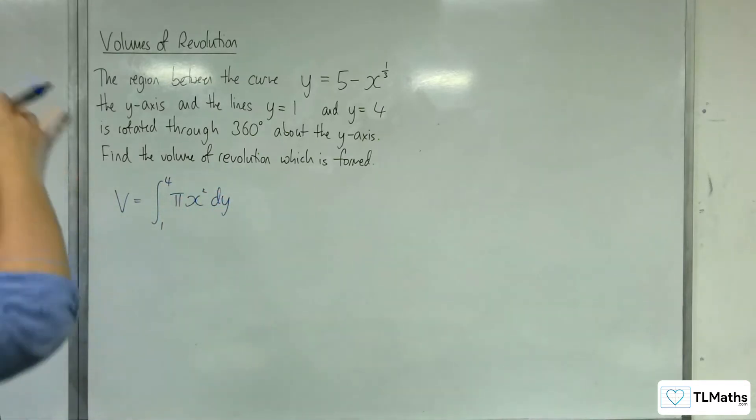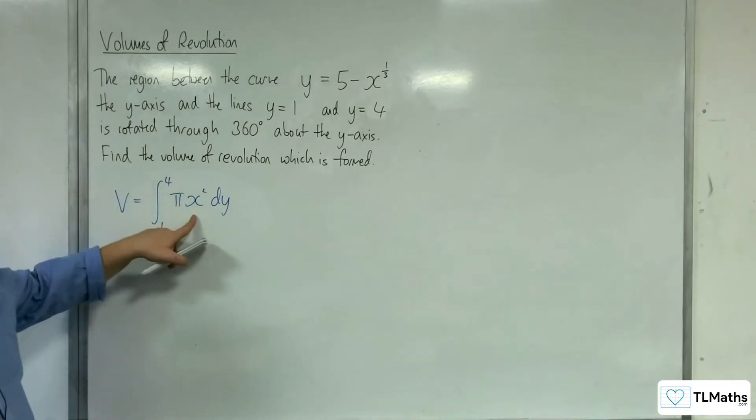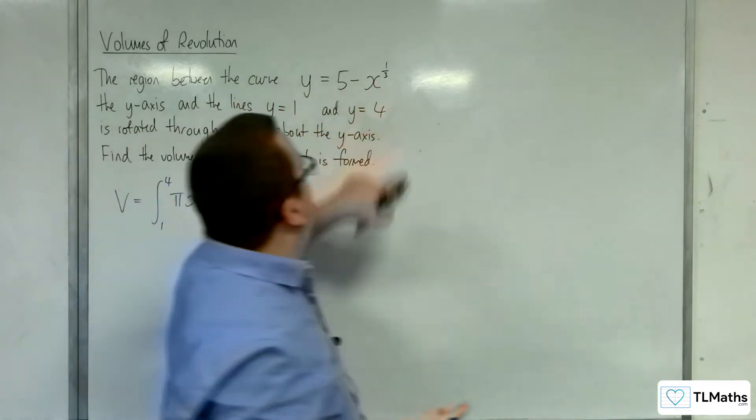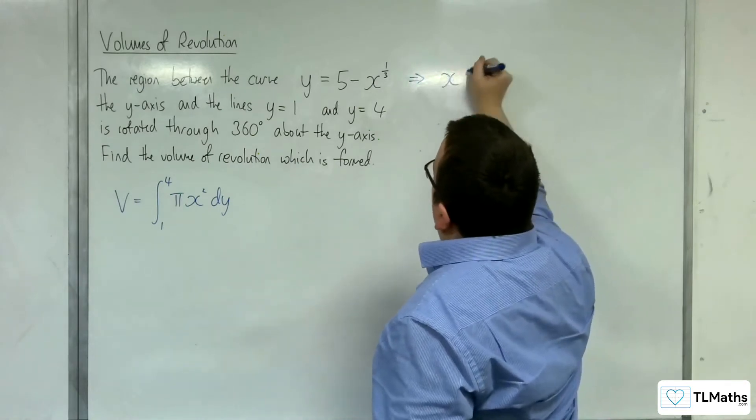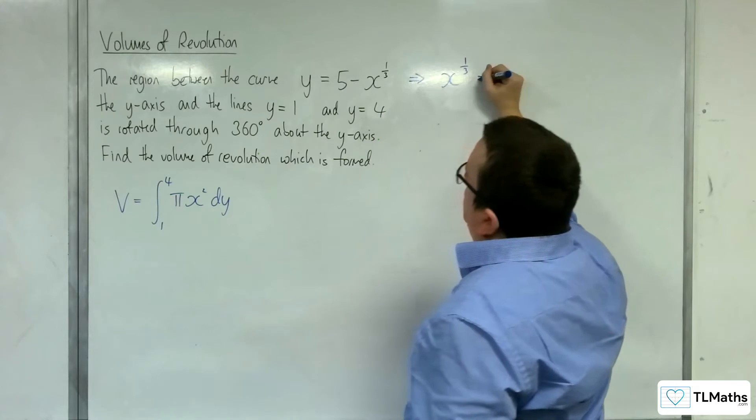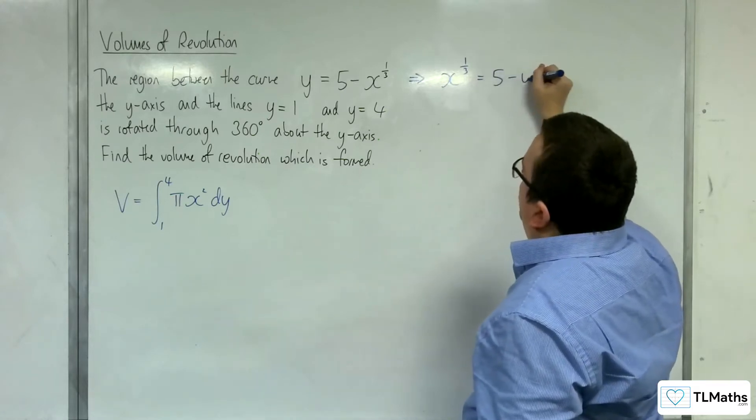Okay, so what we need is x squared, and this is what we currently have. So I'm going to need to rearrange this. So first of all, I can write x to the 1 third is equal to 5 take away y.